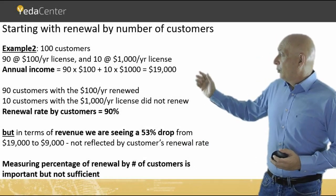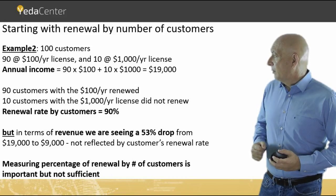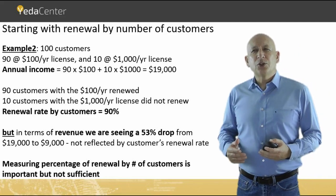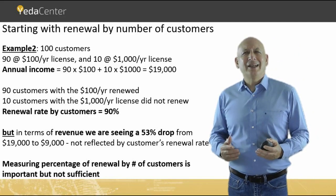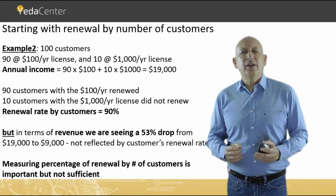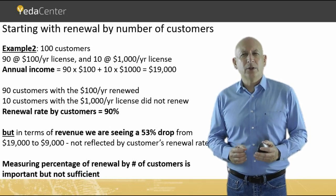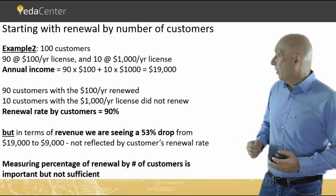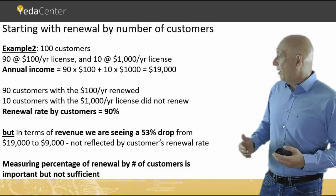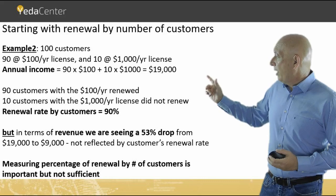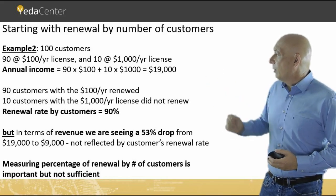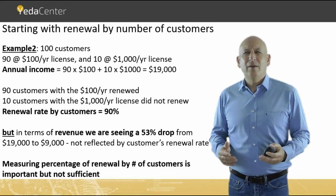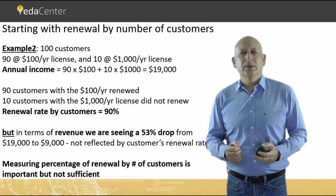According to the following example, now we have 100 customers, out of which 90 customers each have a license of $100 and 10 customers each have a license of $1,000. So all together we have 90 times $100 plus 10 times $1,000 — therefore, we have an annual income of $19,000.